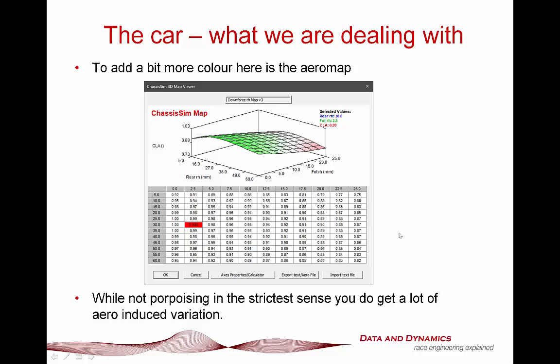Just to also illustrate what we're dealing with, here's the aero map. I've normalised this aero map, and in order to get the actual CLA numbers you simply need to multiply by the global number of 6. While this is not a porpoising aero map in the strict sense, what this aero map does have is a lot of aero-induced oscillation. Consequently, it forms a really good basis for our case study, because you're going to have a lot of aero-induced oscillation in the platform.